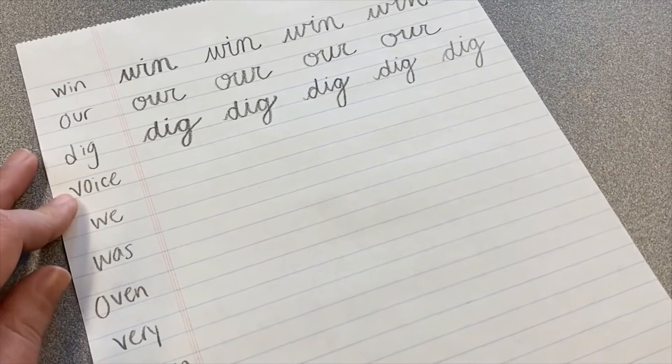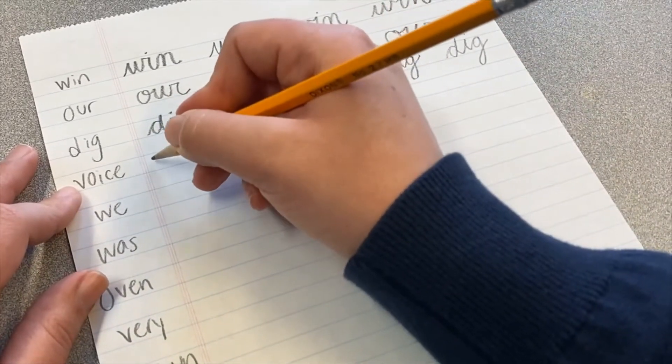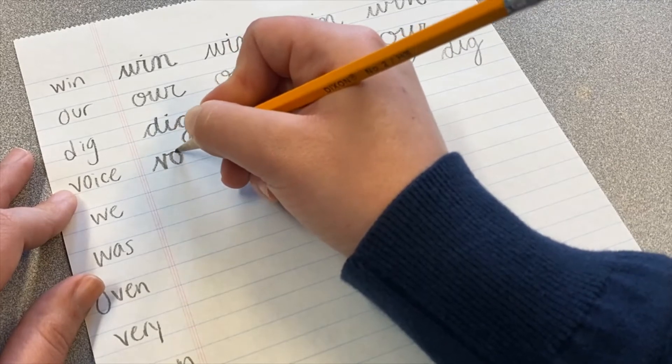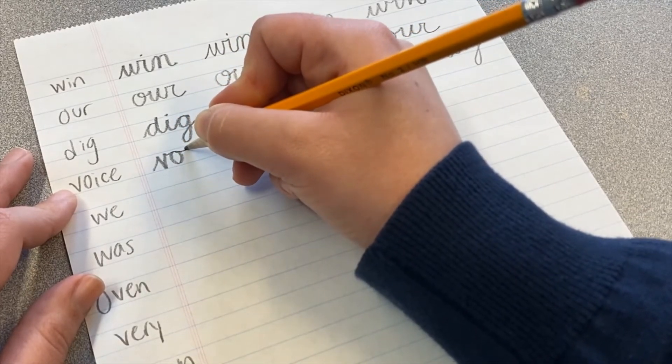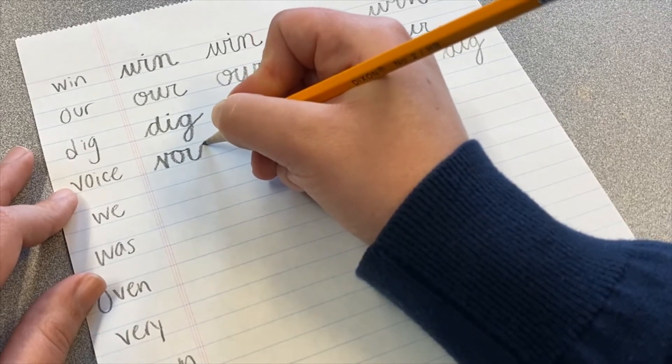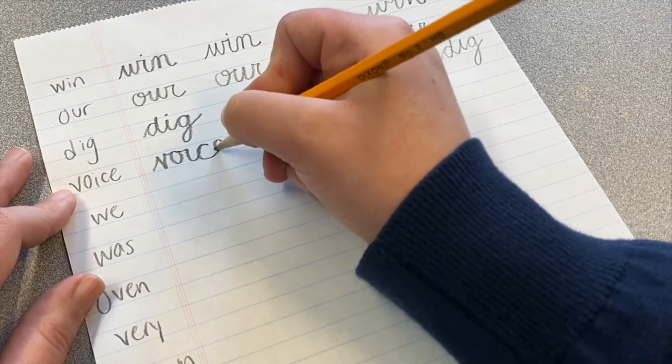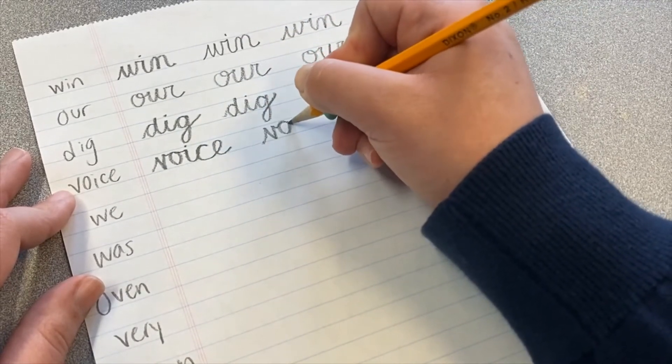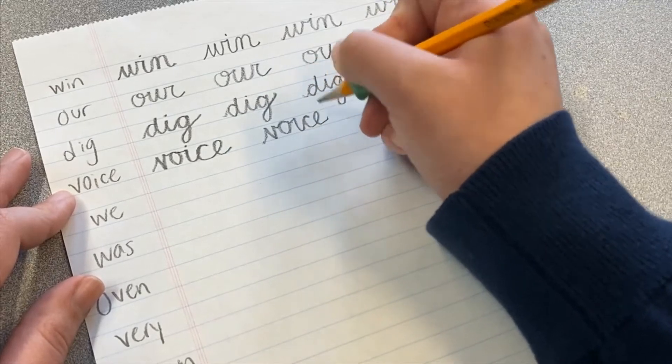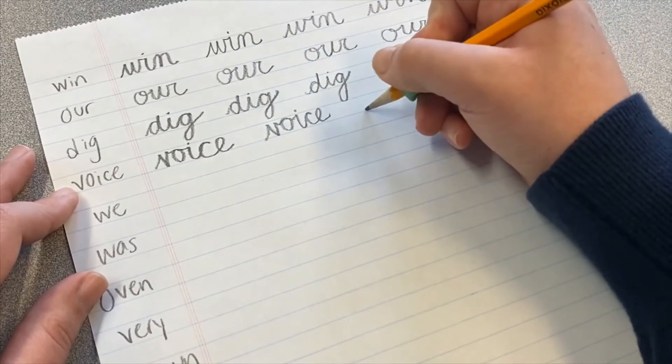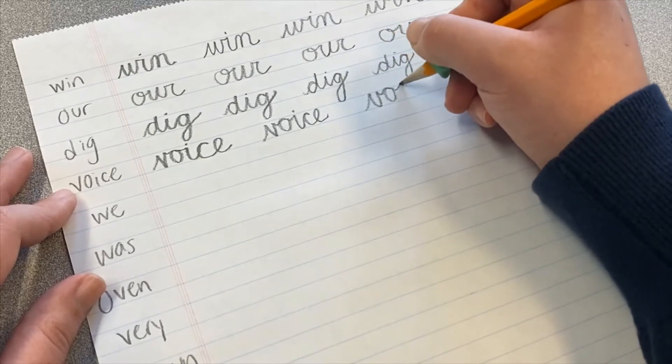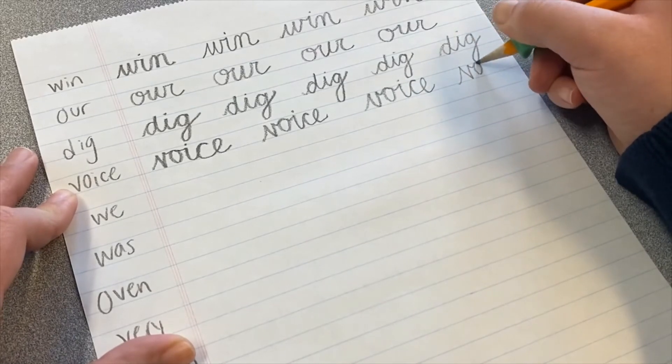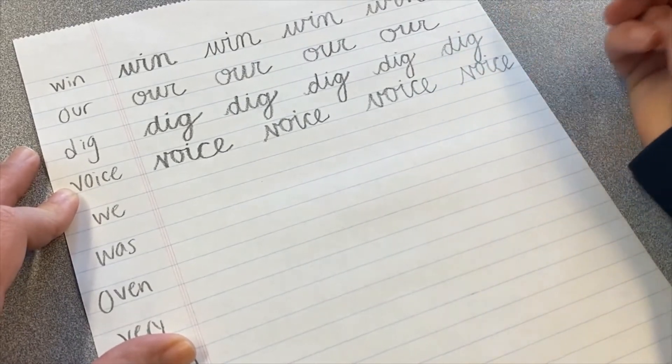The next word is the word voice, V-O-I-C-E. So I'll make our V, and then we'll go over for the O, and then we'll go right into the I, down into the C, and then the E. Voice.